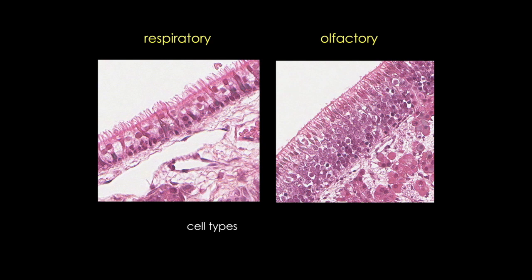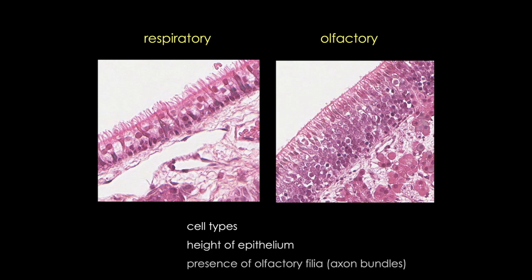Number one is the types of cells that we see in each tissue. Number two, the height and general appearance of the tissue. And three, the presence of special axon bundle structures in the olfactory mucosa.